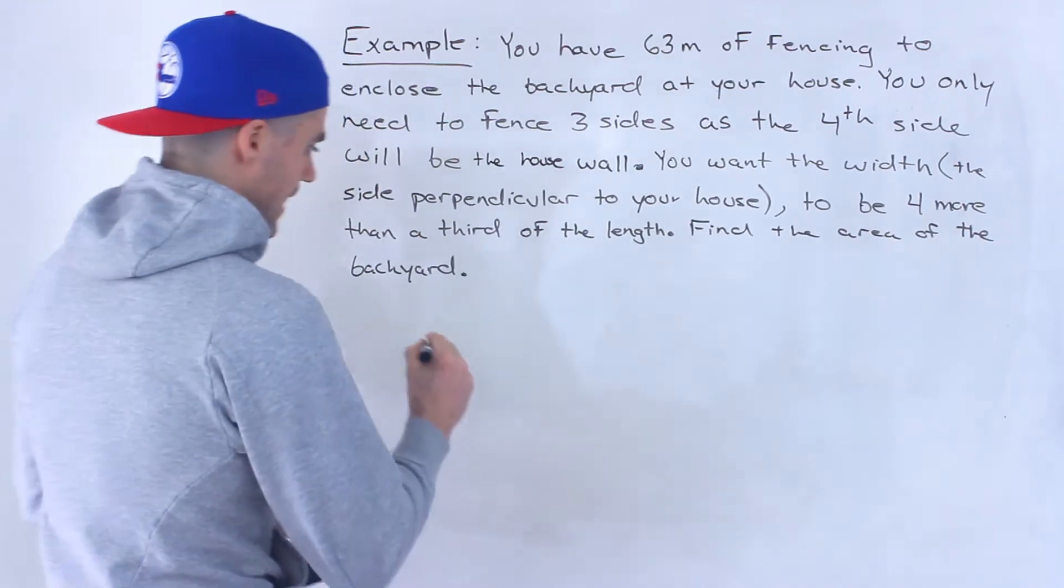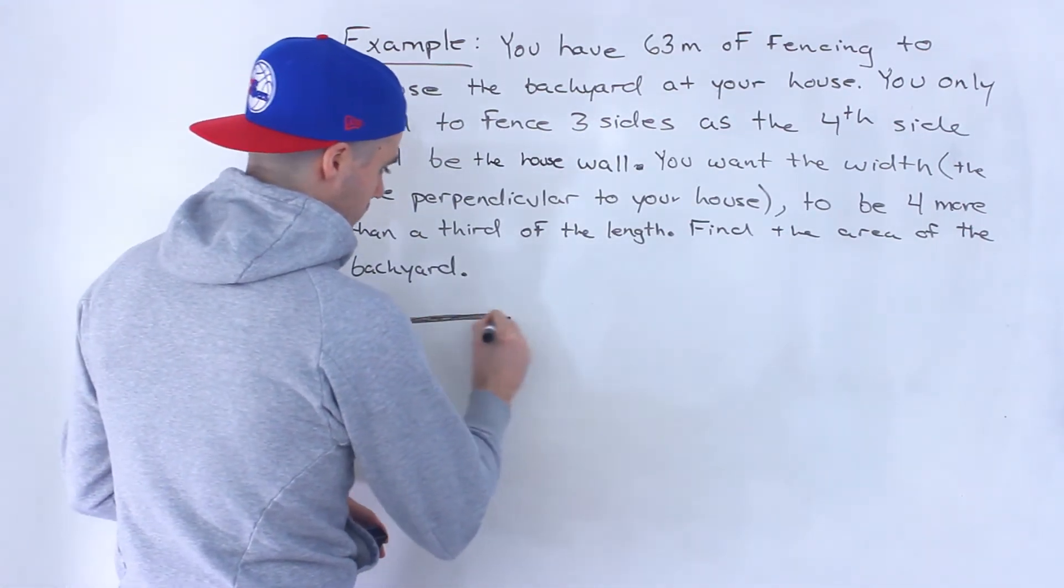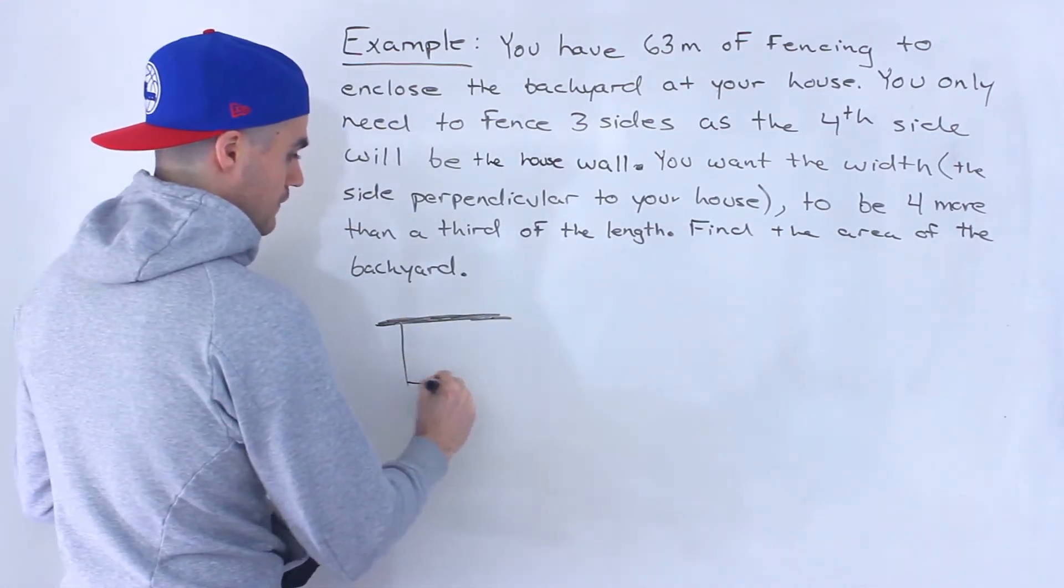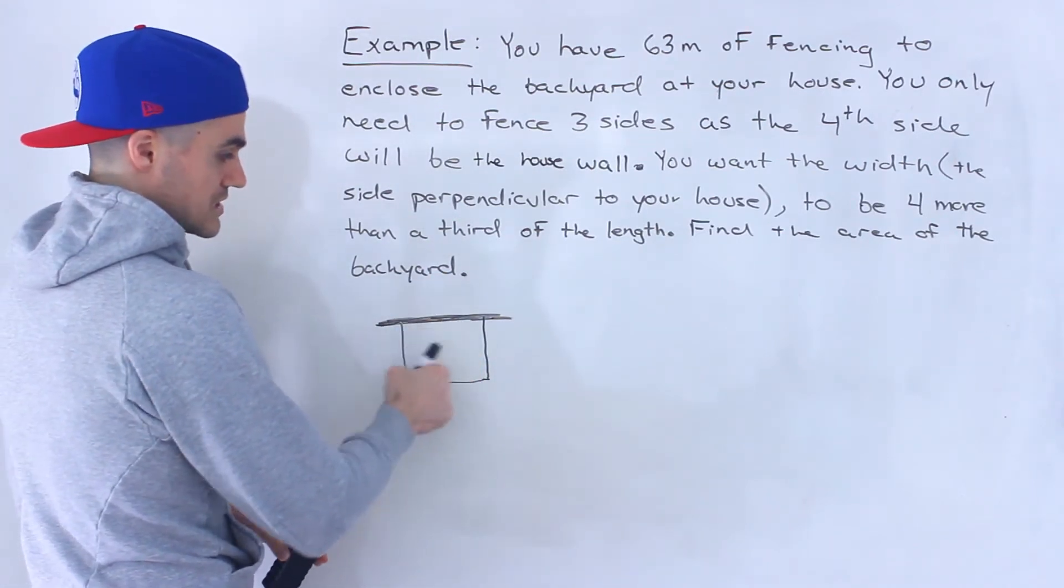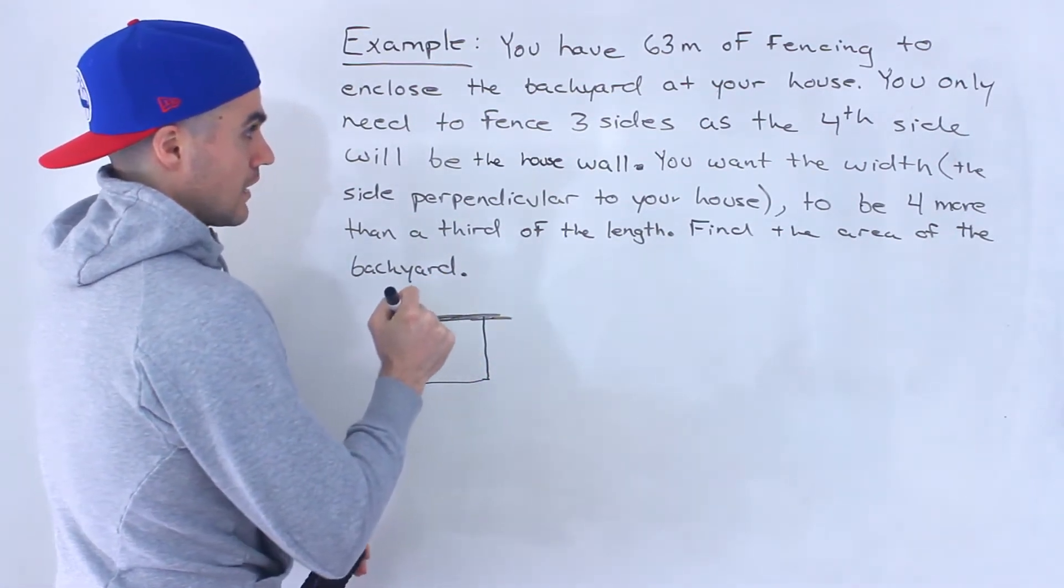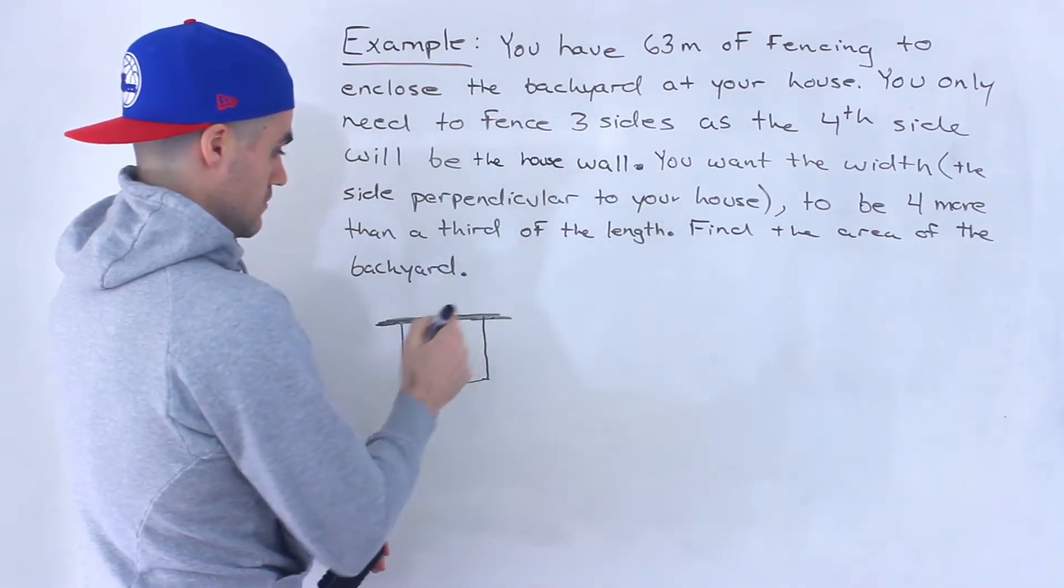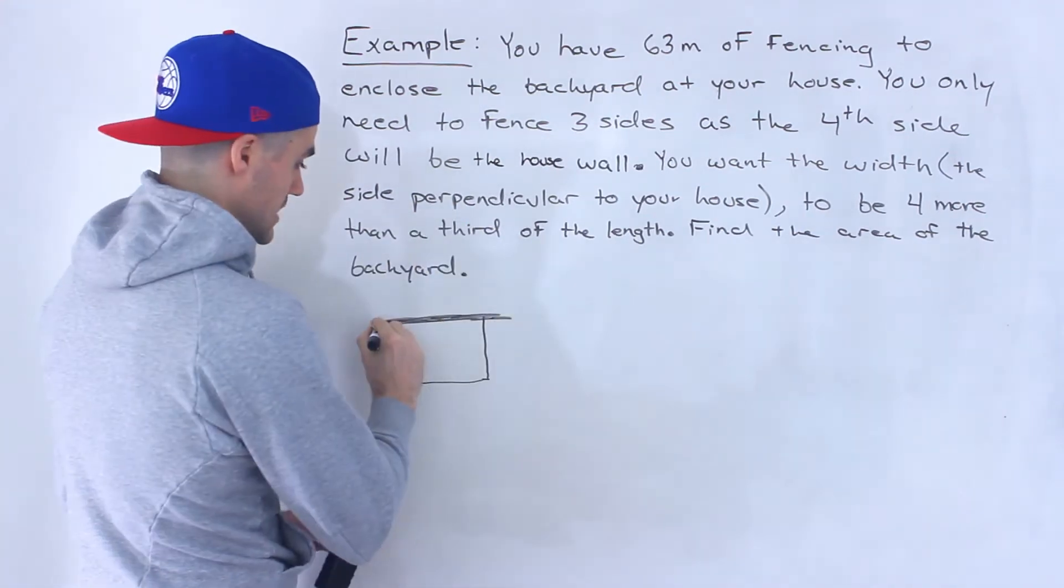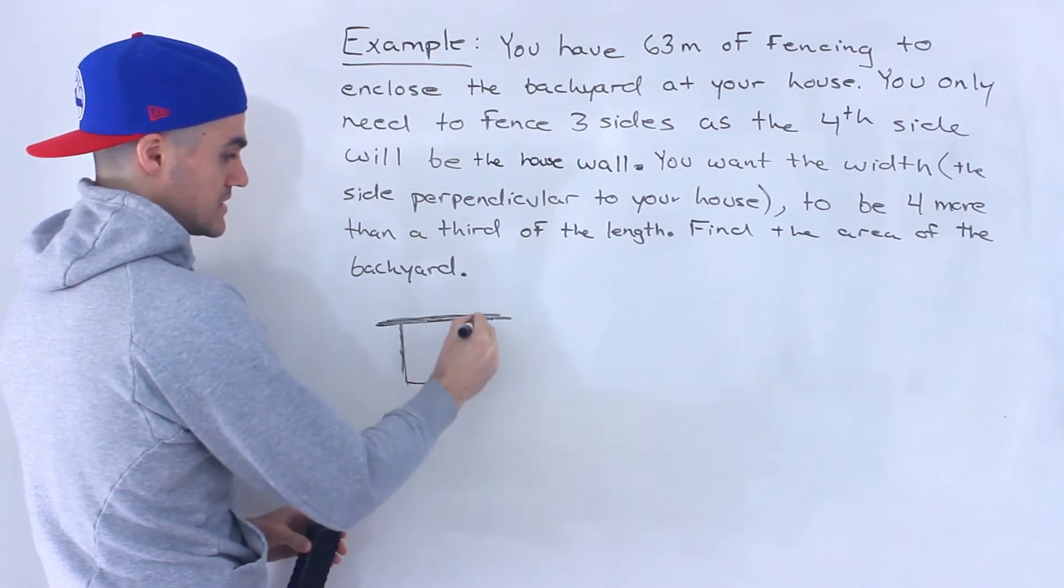So to draw a diagram, let's say that this is your house here, right? This bold line. And then we're going to have fencing to enclose this backyard here. And what they're saying is you want the width, so that's this side, the side perpendicular to your house. So notice that you got your house here. So the side perpendicular to it is this. So this here is the width.